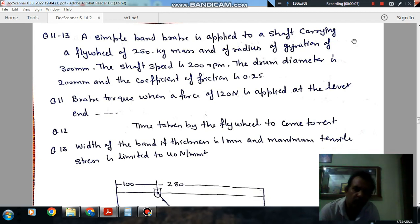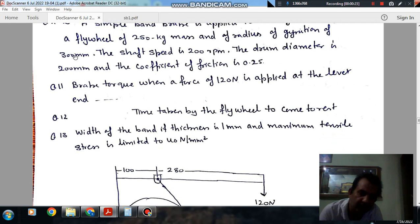Hello, welcome again. We are solving some questions of machine design on the topic of brakes, questions number 11 and 13. Questions 11 to 13 carry a common statement: a simple band brake is applied to a shaft carrying a flywheel of 250 kg mass and radius of gyration 300 mm.